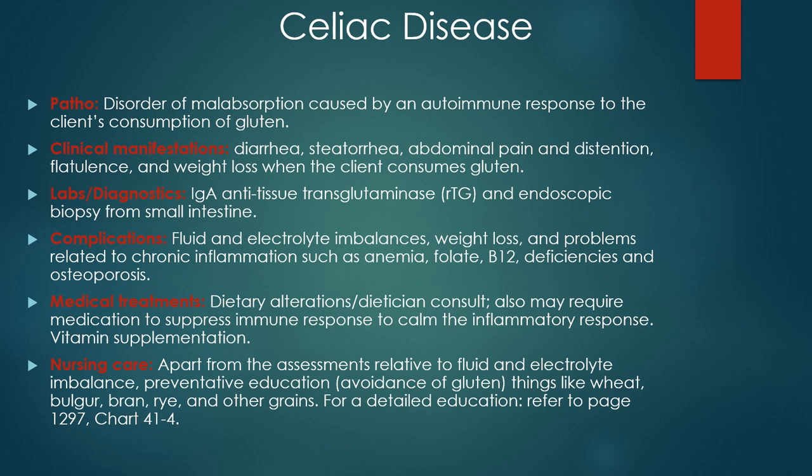If a client with celiac disease consumes gluten, they would have diarrhea, steatorrhea, abdominal pain and distension, flatulence, and weight loss. It's diagnosed by drawing blood work for the immunoglobulin for gluten, which is about 90 percent sensitive and 95 percent specific to celiac, and findings are confirmed with an upper endoscopy with biopsies of the small intestine. This is a lifelong disease — it's not curable. Treatment is really just to refrain from the consumption of gluten, and collaboration with a dietitian will be done. The client should be informed of how long it will take for symptoms to subside.